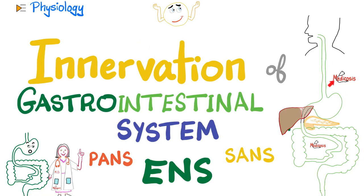Hey guys, it's Medicosis Perfectionist, where medicine makes perfect sense. Let's continue our physiology playlist. In previous videos we started talking about GI physiology — slow wave potentials, spike potentials, tonic contractions, the calcium-calmodulin system. Today let's dig deeper into the enteric nervous system, which is made of the myenteric plexus for motility and the submucosal plexus for secretions. On top of that, you can have the parasympathetic which stimulates the enteric, or the sympathetic which inhibits the enteric.